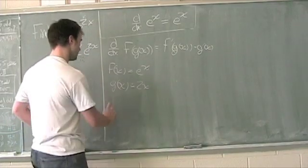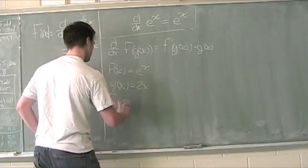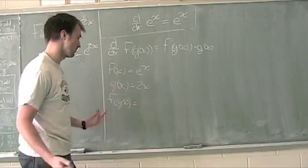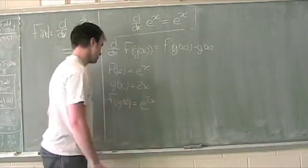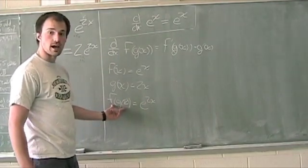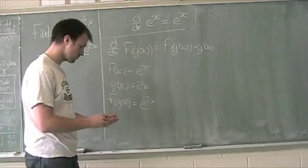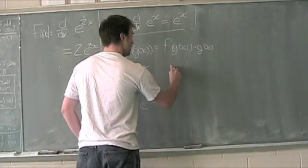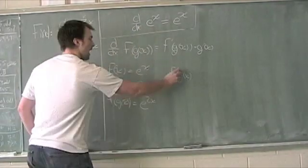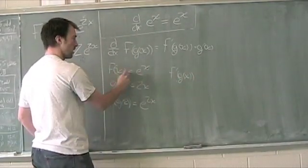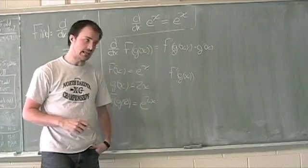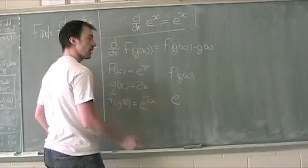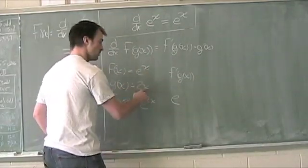f of g of x is simply f of x, and everywhere we see x in the function f of x, we replace it with g of x, or 2x. So this is actually e to the 2x. So if we're looking for the derivative here, we have a composition and we can use the chain rule. We're going to separate this out and find f prime of g of x. f prime is the derivative with respect to x of e to the x, which is e to the x — so it's e to the 2x.